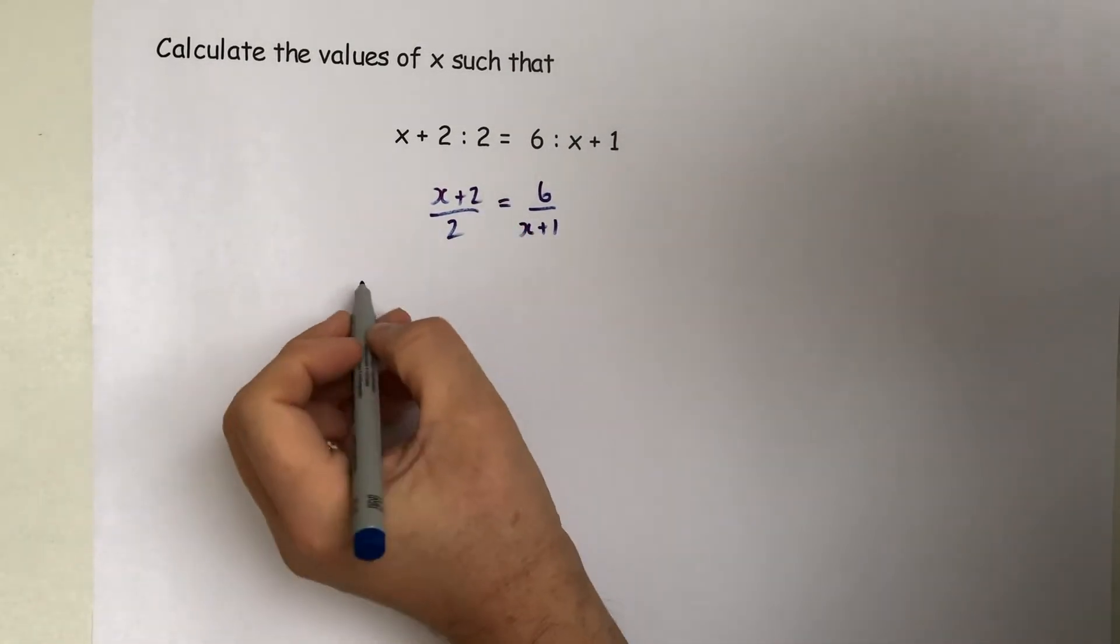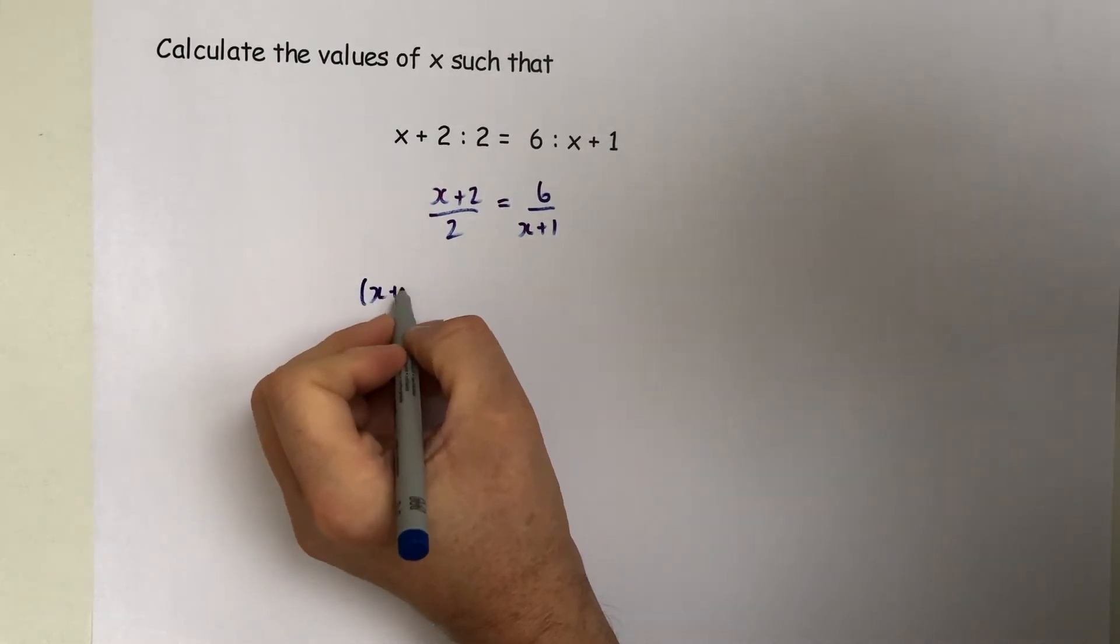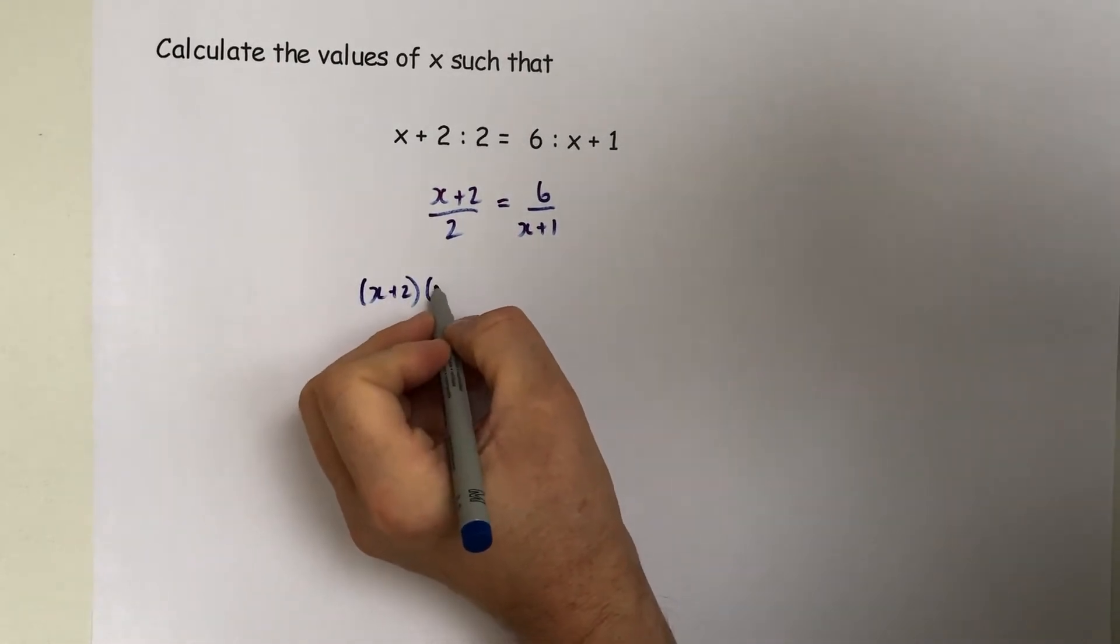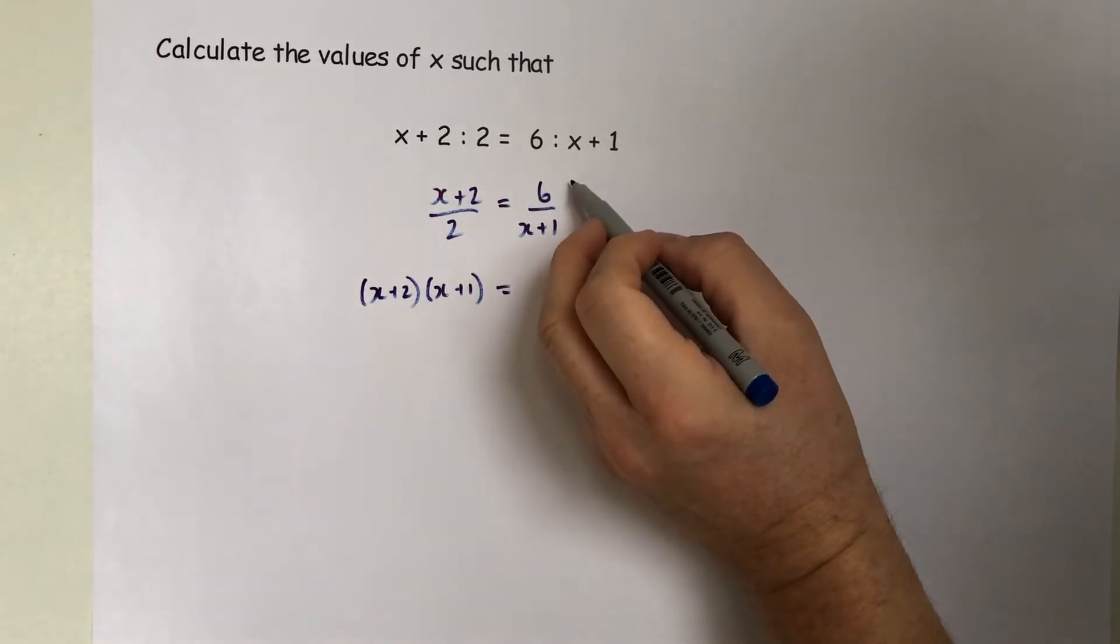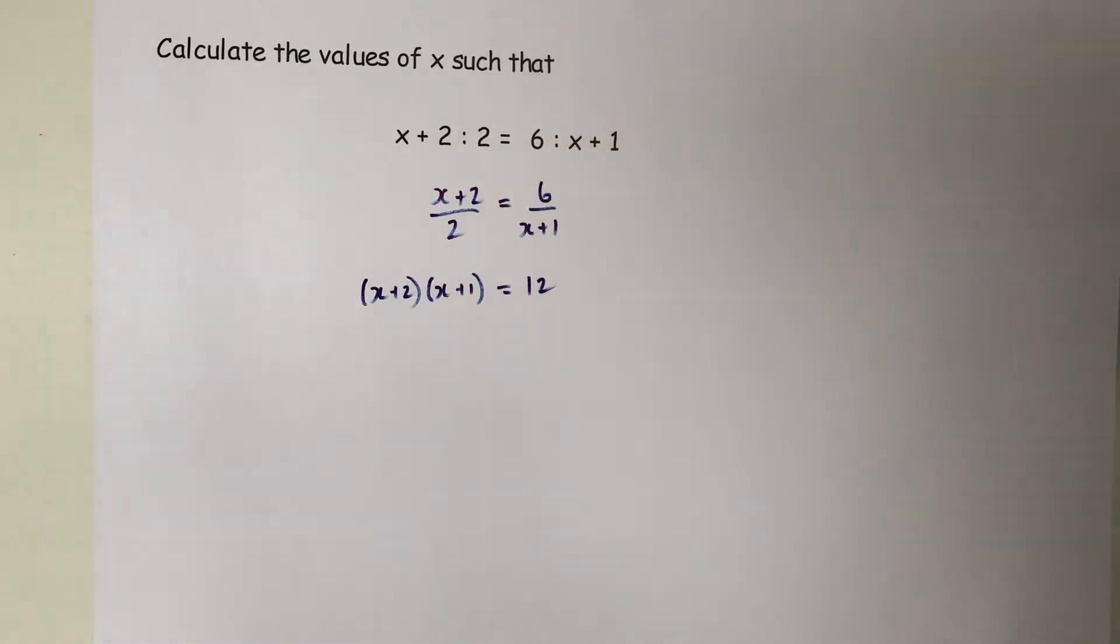If we cross multiply and take the x plus one to the other side, we then end up with the x plus two multiplied by the x plus one. If I take the two across the other side, we end up with six times the two, which is 12.